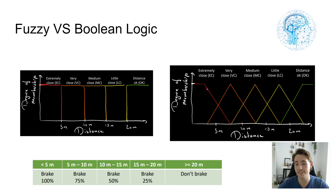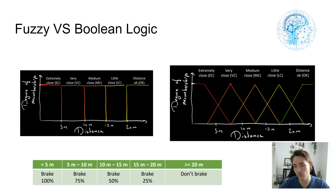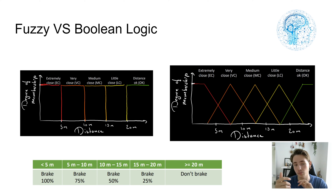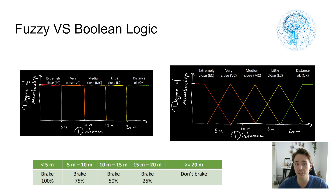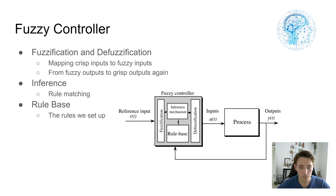With these triangles, we can see how it goes from extremely close, getting less extremely close until we hit five meters, then becoming more very close — only 100% very close when the membership degree reaches one. Then it decreases toward medium close. So instead of false or true, we can say at 15 meters it's 50% extremely close and 50% very close, and then at another point it's 60% very close and 40% extremely close. This gives us intermediate steps between crisp categories.